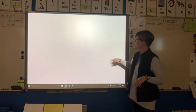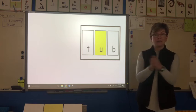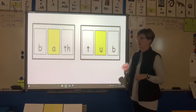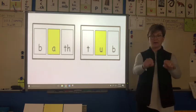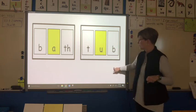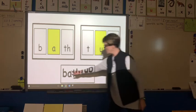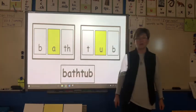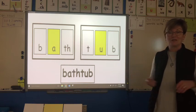Let's do the next syllable: t-u-b, tub. I think I hear it. Let's do it together: bath-tub, a little faster — bathtub, all together: bathtub. Wow — one, two, three, four, five, six, seven. You just read a word that has seven letters. Don't be afraid of these big words.